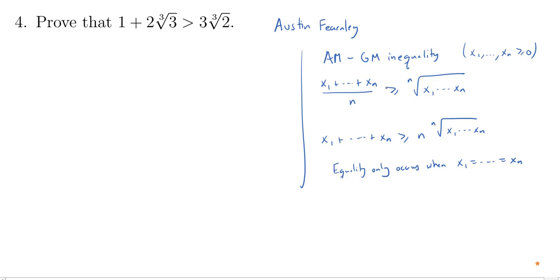So in this case, what I'm going to do is let my X1 through XN, there's going to be three numbers, and they're going to be 1, the cube root of 3, and the cube root of 3. So there's three numbers. And so by the AM-GM inequality, and actually I know it's a strict inequality because the three numbers are not all the same. Two of them are, but not all three. This will be greater than 3 times the cube root of the product of these three numbers.